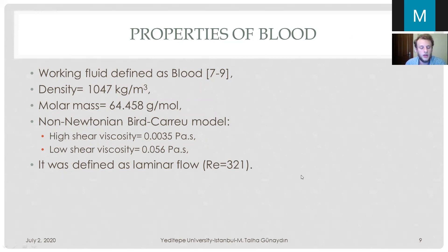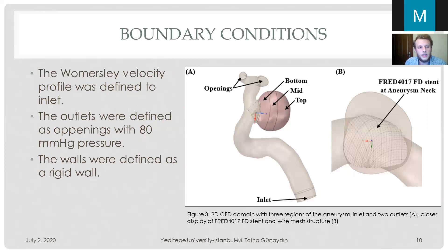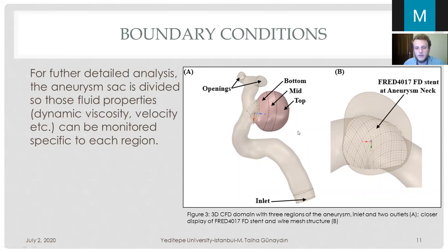Blood was also defined as laminar flow because the Reynolds number was less than 2300. The inlet boundary conditions defined a Womersley velocity profile, and the outlets were defined as openings with a pressure value of 80 mmHg. The artery walls were defined as rigid walls — although this is not the case in real life — saving significant computational time. For further detailed analysis, the aneurysm sac was divided into three equal volumes: the top, middle, and bottom regions. A close-up view of the FRED-4017 flow diverter stent at the aneurysm neck is also shown.